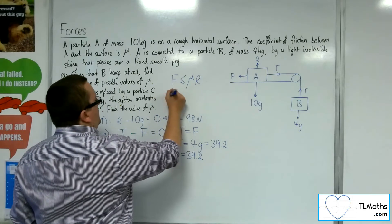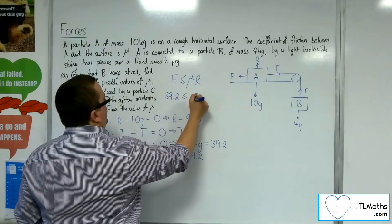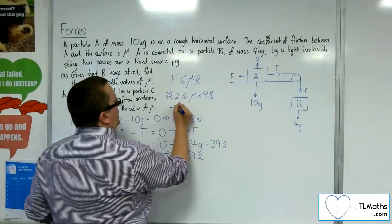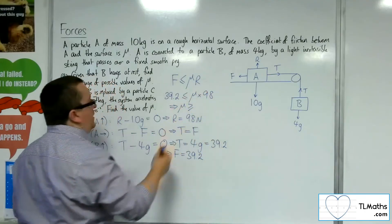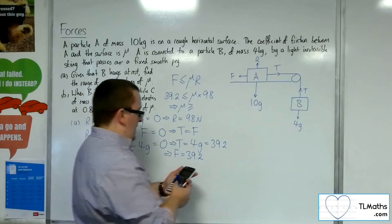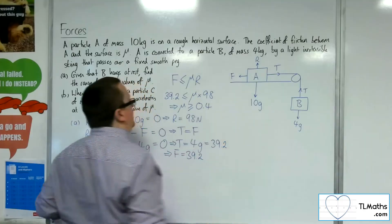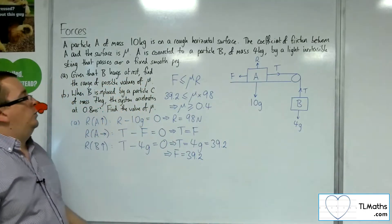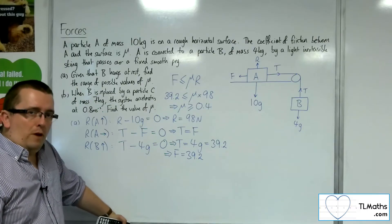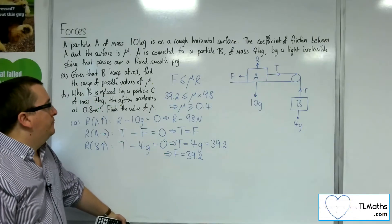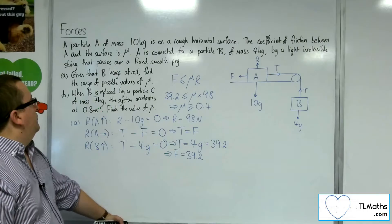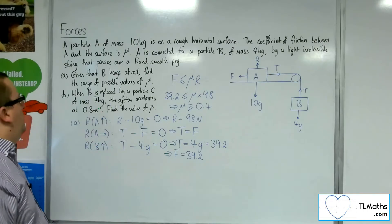So I've now got 39.2 has got to be less than or equal to mu times R, the 98. So that means that mu must be greater than or equal to 39.2 divided by 98, and that gets me 0.4. So mu must be greater than or equal to 0.4 in order for this to be at rest, for the acceleration to be 0. So that's the situation as it stands for A.